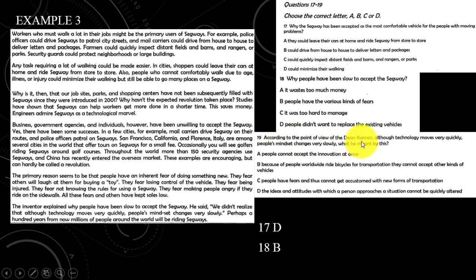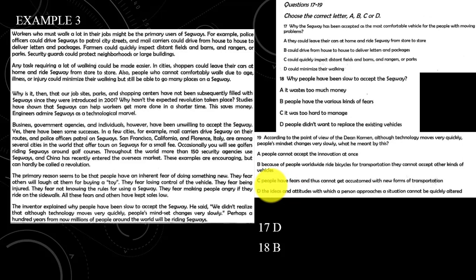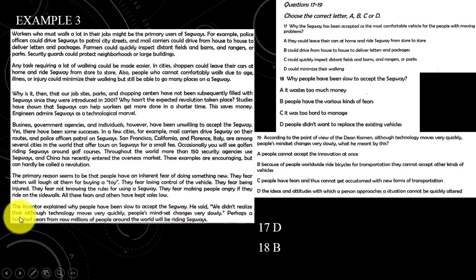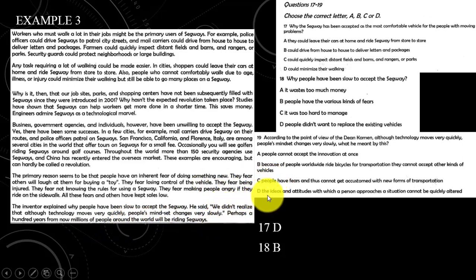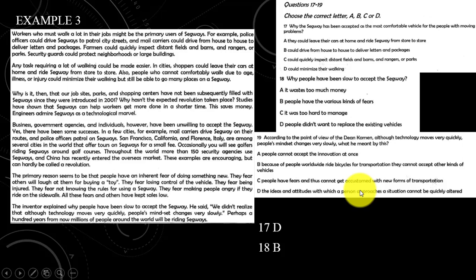The author states that although technology moves very quickly, people's mindset changes very slowly. The options are: people cannot accept innovation at once; people worldwide drive bicycles for transportation; people have fears and cannot be accustomed to new forms of transportation; or the ideas and attitudes with which people approach a situation cannot be quickly altered. The inventor himself said 'we didn't realize that although technology moves quickly, people's mindset changes very slowly.' This matches option D — 'the ideas and attitudes with which a person approaches a situation cannot be quickly altered.'